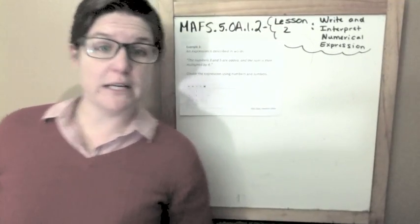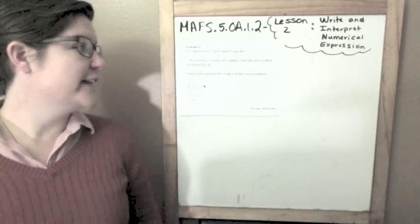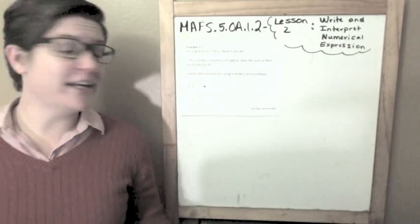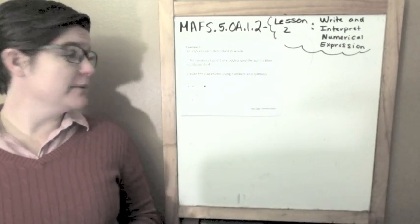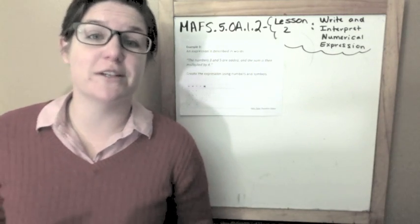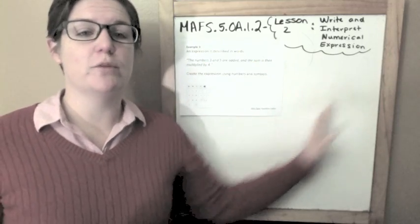We're on example 3. It says an expression is described in words. The numbers 3 and 5 are added, and the sum is then multiplied by 4. Create the expression using numbers and symbols. So this is an equation editor problem. I'm going to show my work over here.